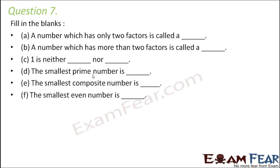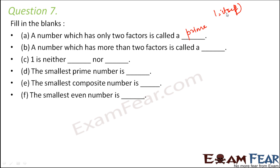Question number 7: Fill in the blanks. A number which has only 2 factors is called a prime number, because a prime number has only 2 factors — 1 and itself. A number which has more than 2 factors is called a composite number.